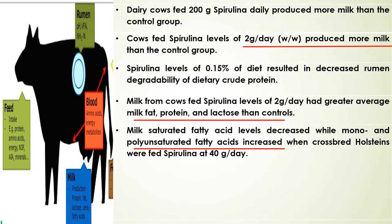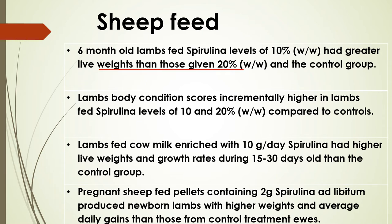When cows are fed with spirulina, an increase in milk production has been observed. Milk fat, protein, and lactose content were higher compared to the control. Saturated fatty acid levels decreased, while unsaturated and polyunsaturated fatty acid content increased in treated cows.